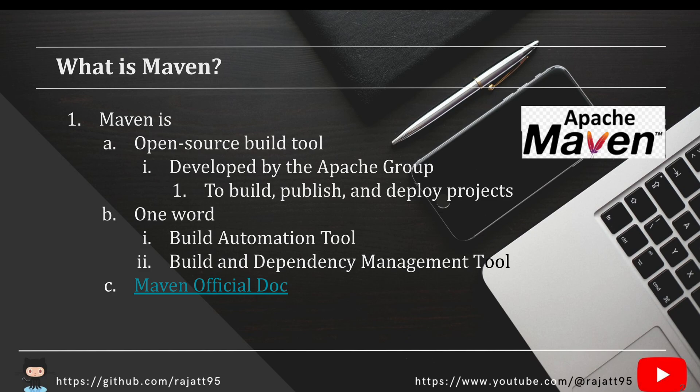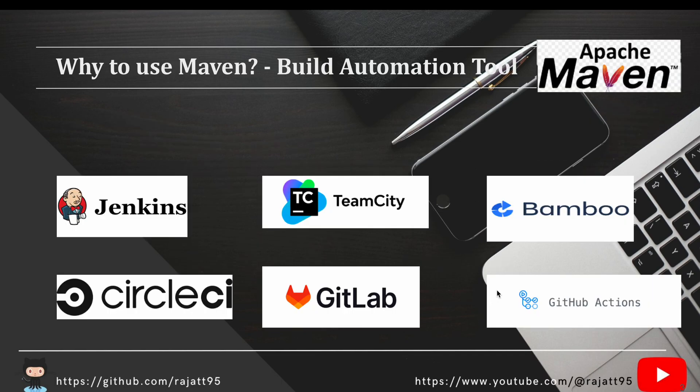Maven is used to build, publish, and deploy projects. In one word, if someone asks you what Maven is, you can say Maven is a build automation tool, or you can say Maven is a build and dependency management tool. We'll see what build and dependency management means.